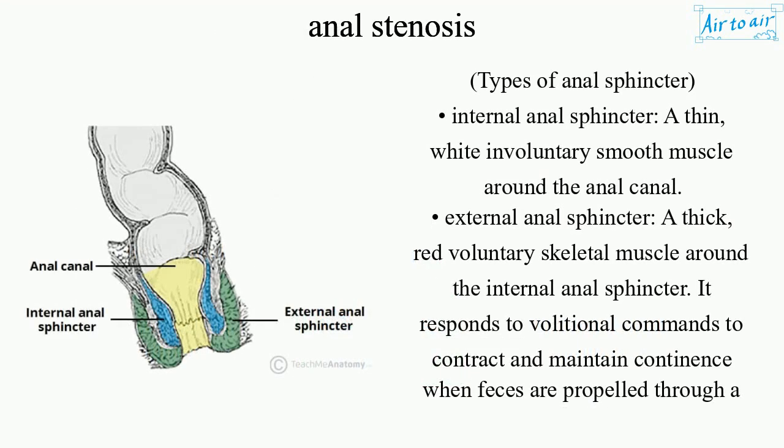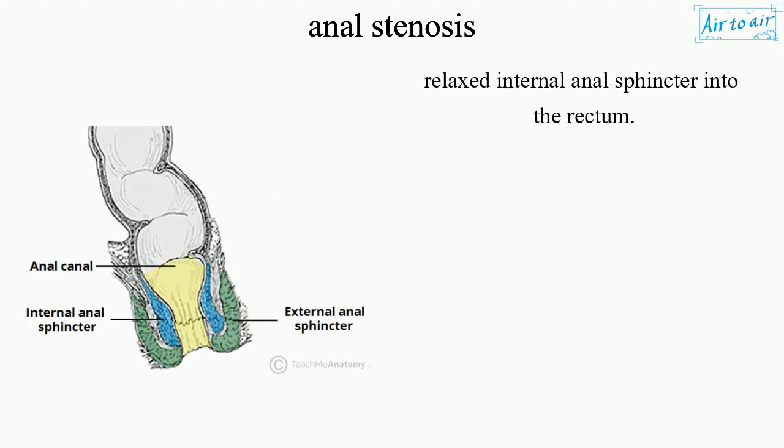Types of anal sphincter: Internal anal sphincter — a thin, white involuntary smooth muscle around the anal canal. External anal sphincter — a thick, red voluntary skeletal muscle around the internal anal sphincter. It responds to volitional commands to contract and maintain continence when feces are propelled through a relaxed internal anal sphincter into the rectum.